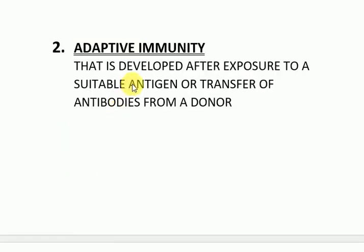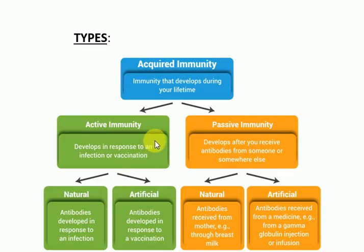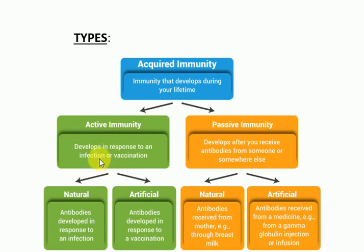Then we have adaptive immunity, which is developed after exposure to a suitable antigen or transfer of antibodies from a donor. The types of acquired or adaptive immunity are active immunity and passive immunity. Active immunity is the one that develops in response to an infection or vaccination — the antibodies are produced by the body itself.